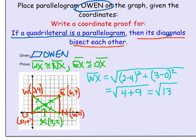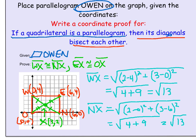Now we want to find NX, and our hope is that it is going to equal √13. Using the points N and X, we get √((2−0)² + (3−6)²), which does come out to equal √13. So we have proven that WX is congruent to NX.